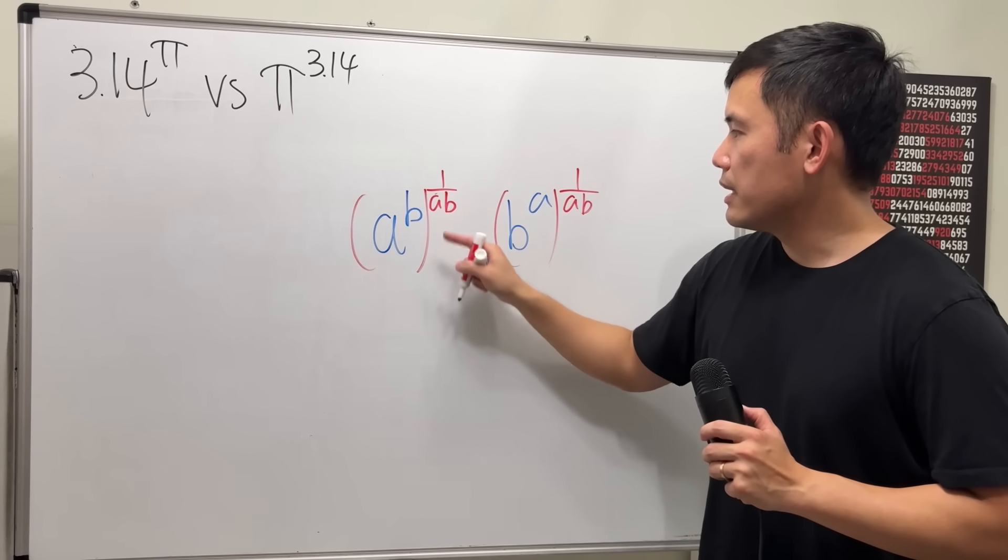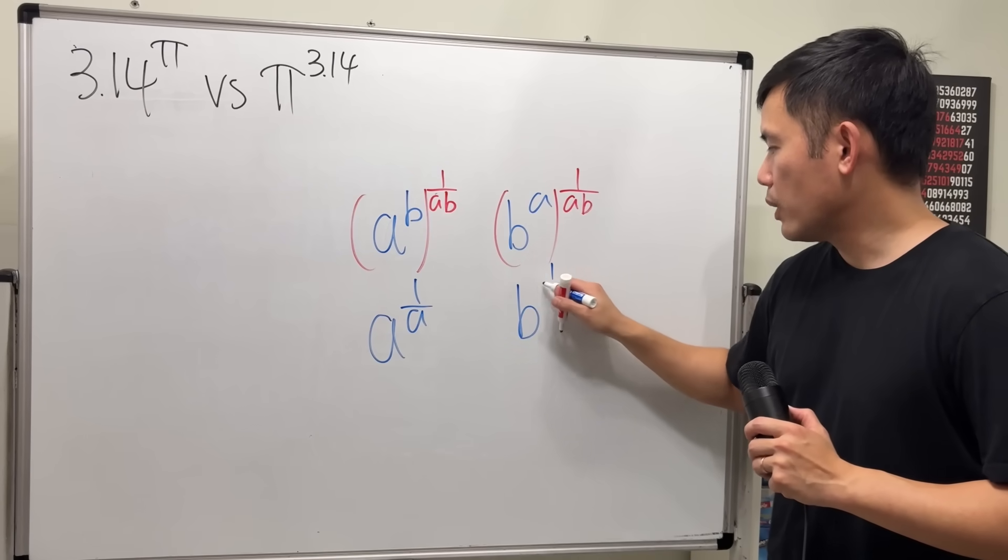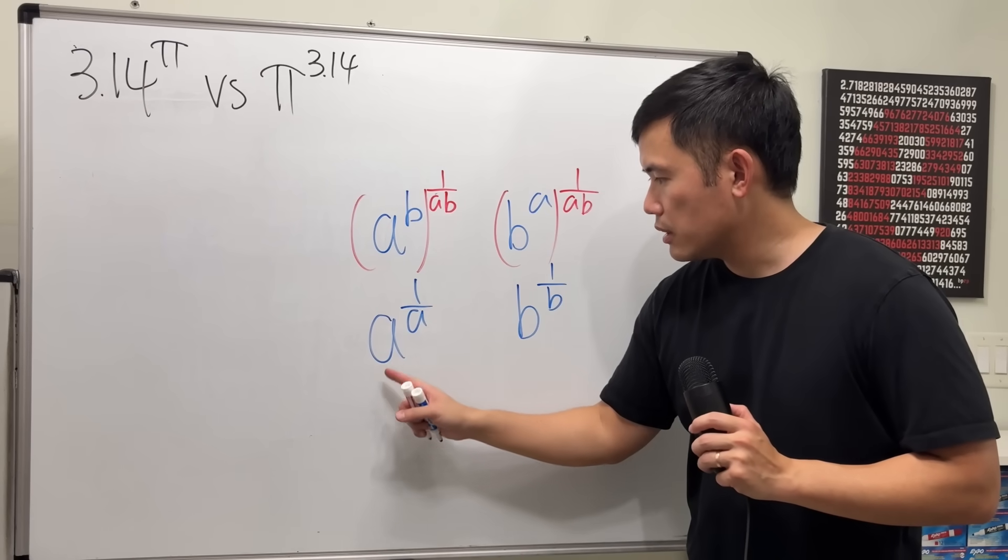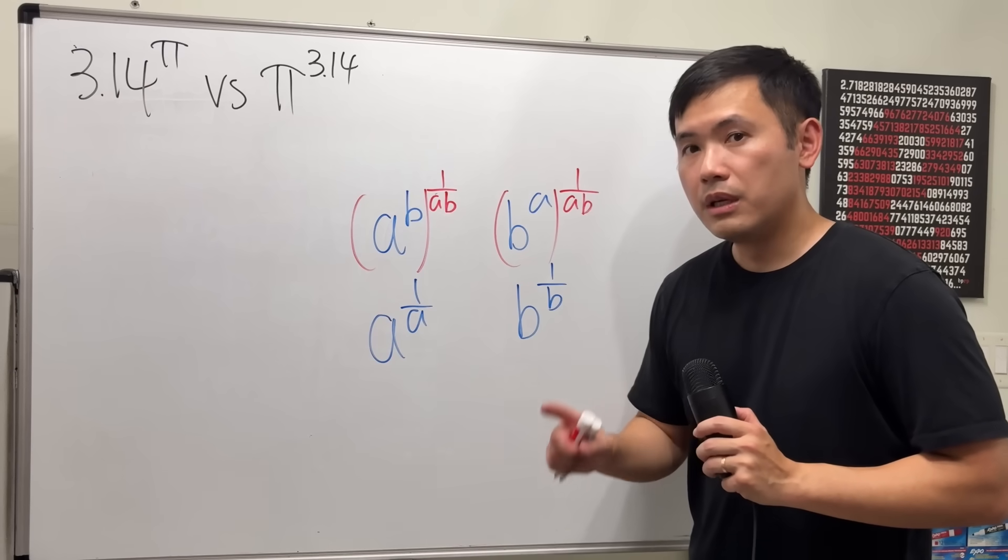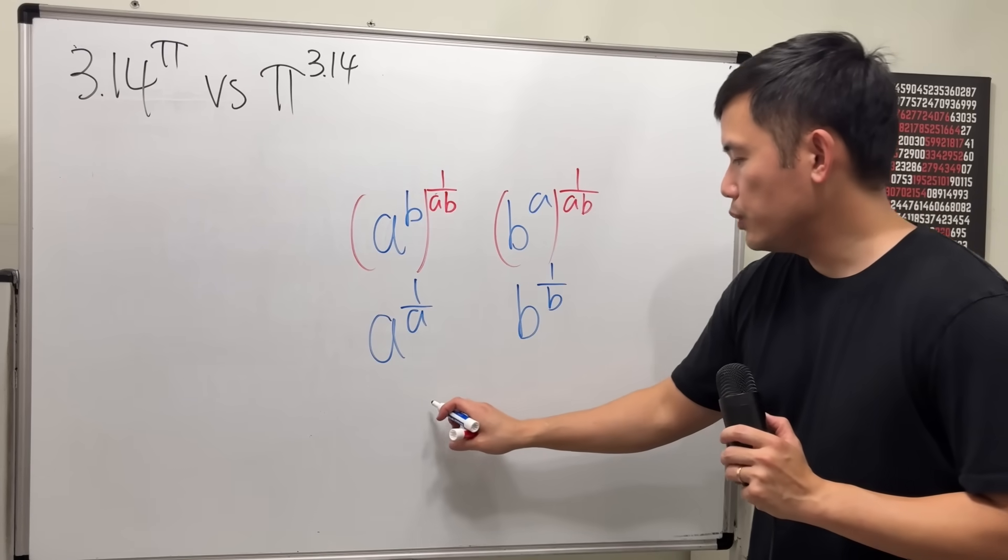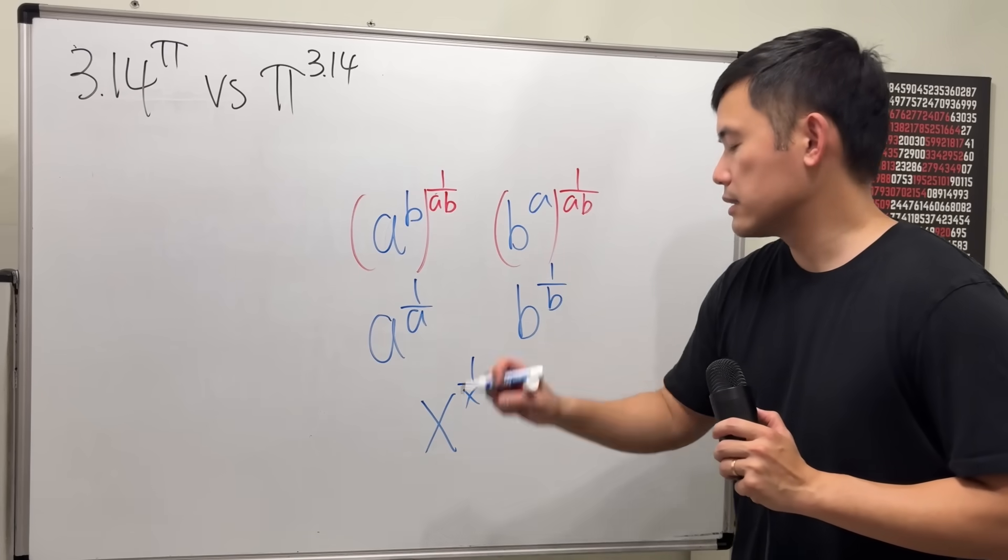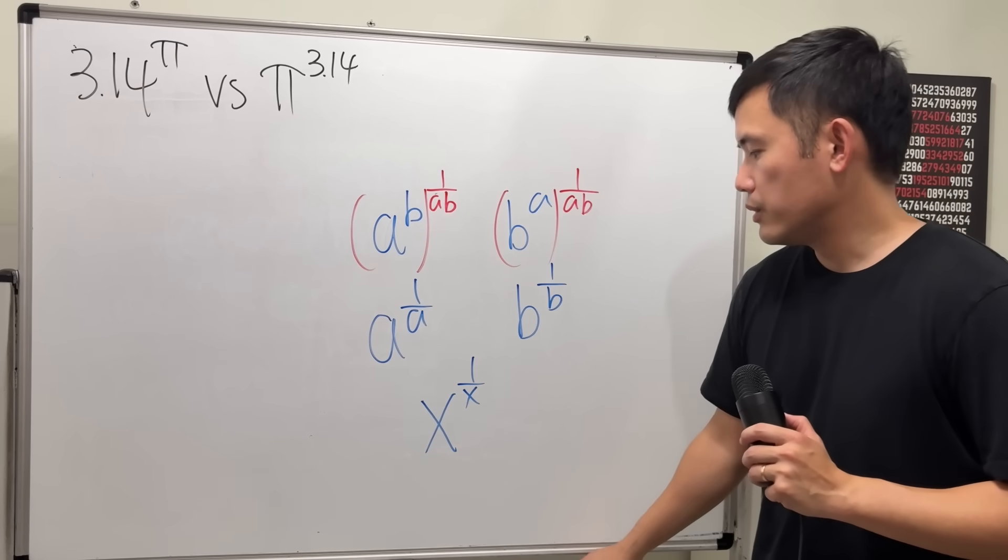So divide this by a right here. Now, b and b cancel, so we get a to the 1 over a. a and a cancel, we get b to the 1 over b. Let's have a look at the structure. A variable raised to 1 over itself. So this suggests us that maybe we should consider the function x to the 1 over x power.